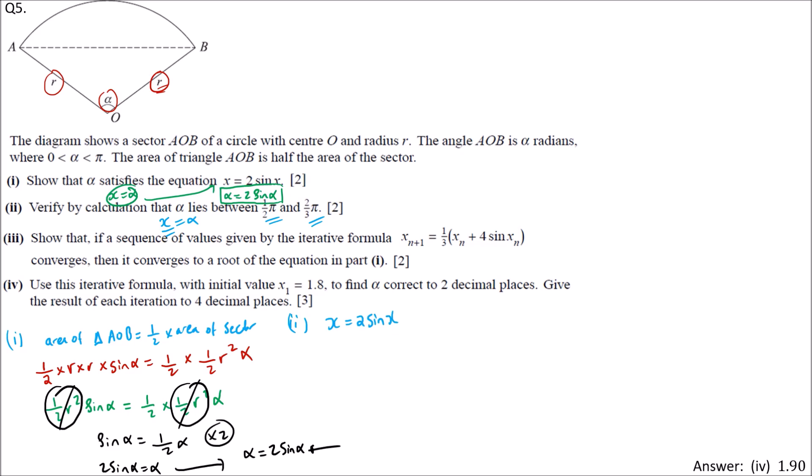We work with the equation x equals 2 sin x. Recall that x here is alpha. We bring it to the left side: x minus 2 sin x equals 0. We can write it in the format f(x) equals 0. So f(x) is x minus 2 sin x. Calculator in radian mode.